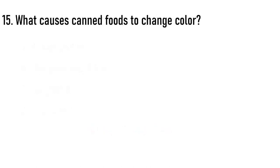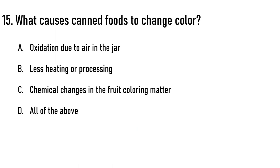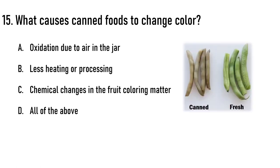What causes canned foods to change color? Options are A) oxidation due to air in the jar, B) less heating or processing, C) chemical changes in the fruit coloring matter, D) all of the above. The correct answer is option D, all of the above.